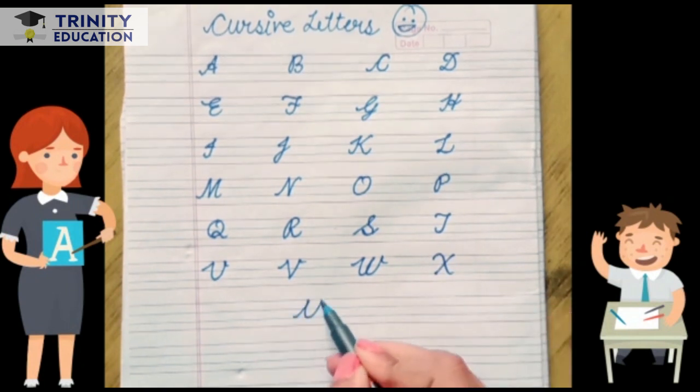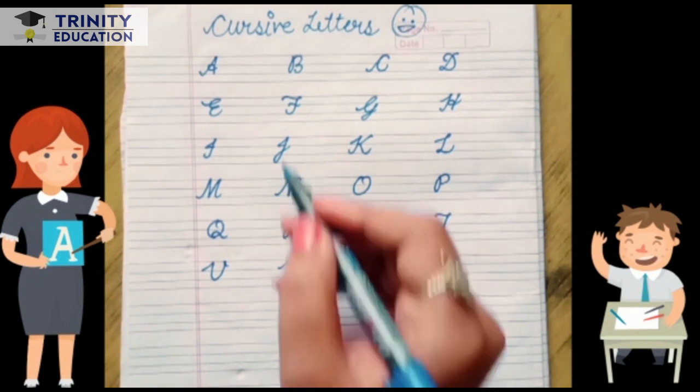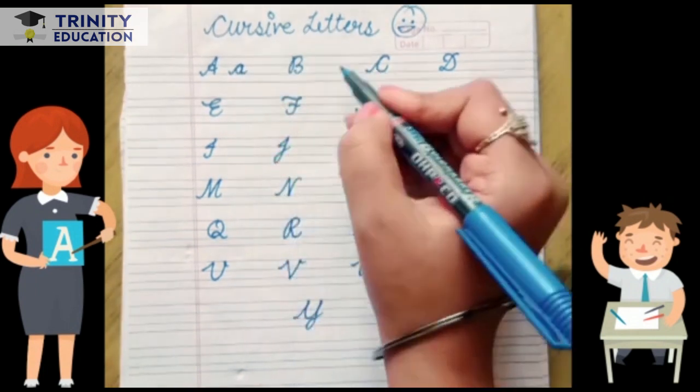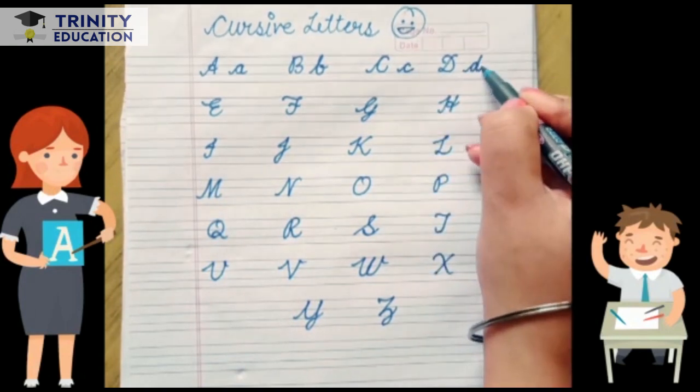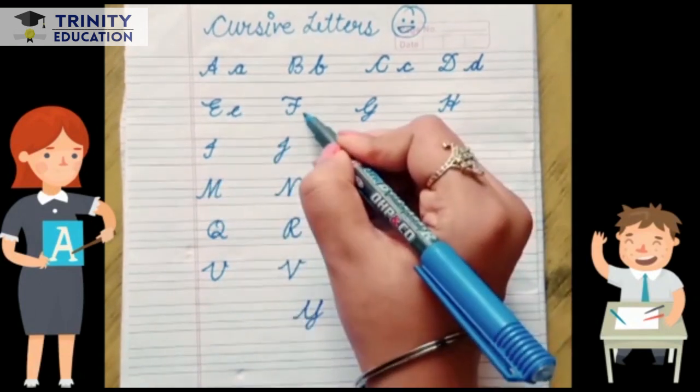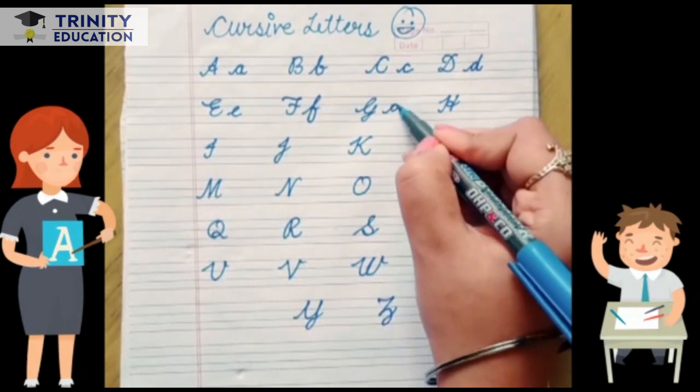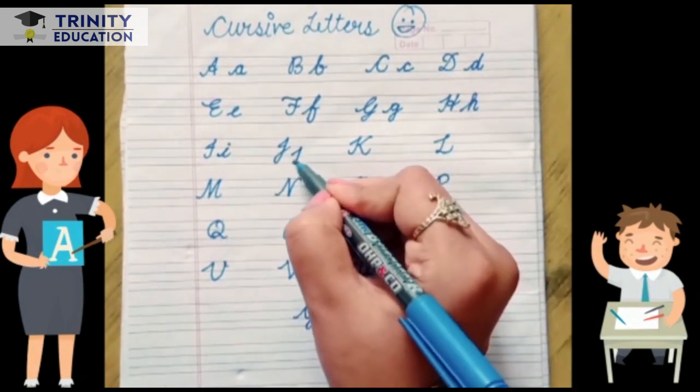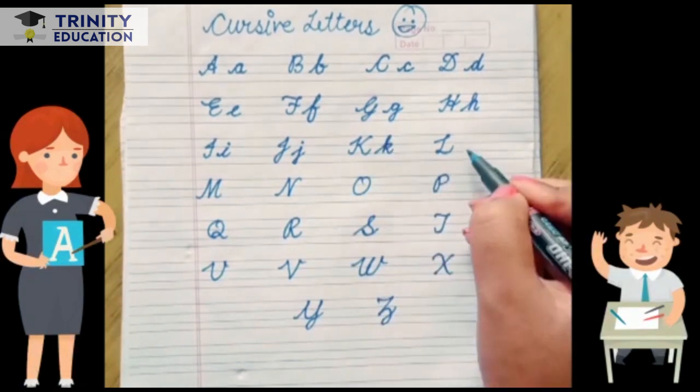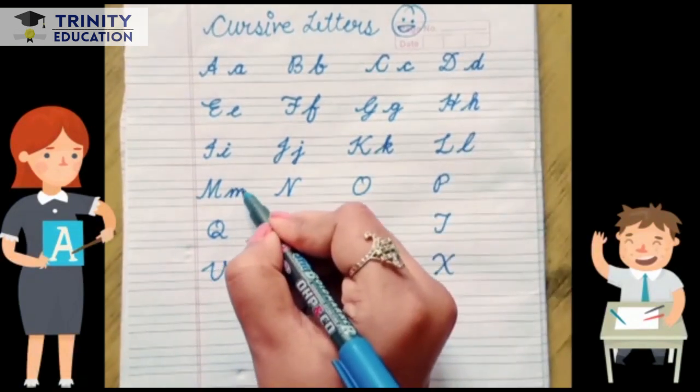Y for yak, Z for zebra. A, B, C, D, E, F, G, H, I, J, K, L, M, N, O, P, Q, R, S, T, U, V, W, X, Y, Z.